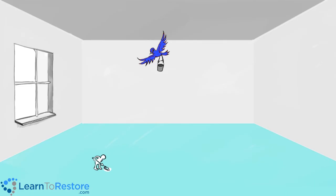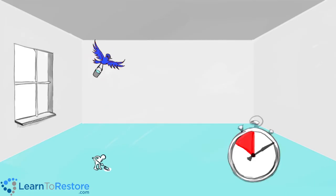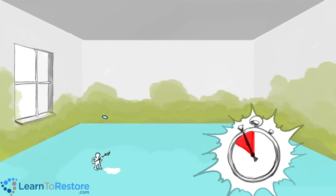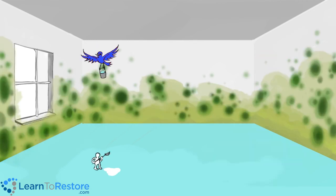If the evaporation and dehumidification are balanced, but there is not enough of either, the water will migrate, leading to secondary damage. Water Damage wins yet again.